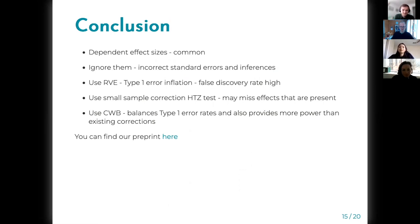You can use small sample corrections like the HTZ test, but using that results in low power, so you may miss effects that are present. If you use CWB, it balances between type I error rates and also provides more power than the existing corrections.